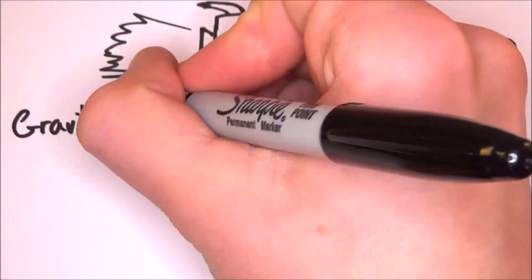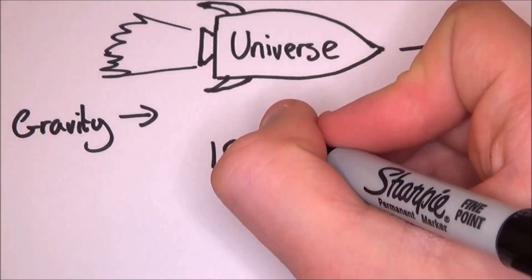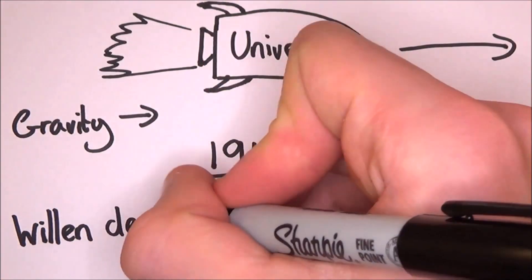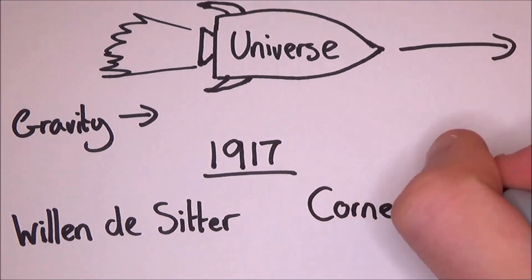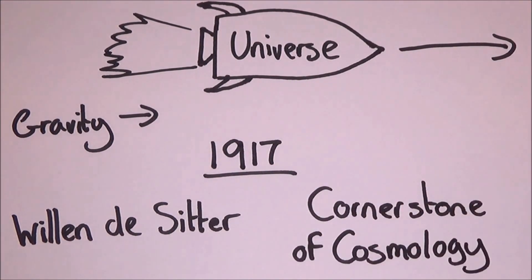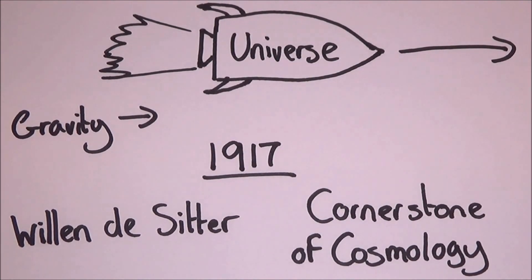Funny enough, this was one of the first ideas proposed way back in 1917 by Wilhelm de Sitter. His idea was only a mere mathematical curiosity with no relevance to the actual universe, but now it is one of the cornerstones of cosmology.